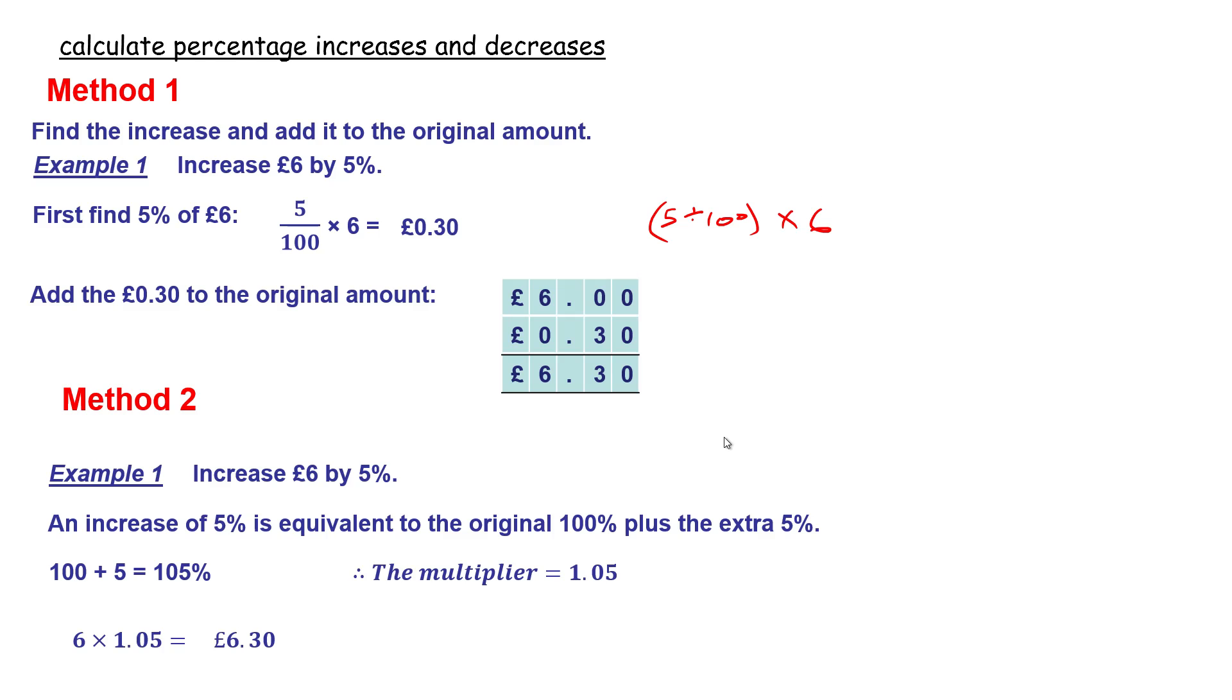Okay, let's have a look at a decrease. First method, we find a decrease and we take it away. So decrease eight pounds by four percent. So I've got to find four percent first of eight pounds. Percent means out of 100, so four divided by 100 times eight. And this is what you put in your calculator.